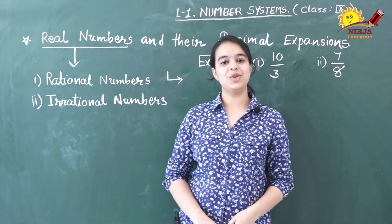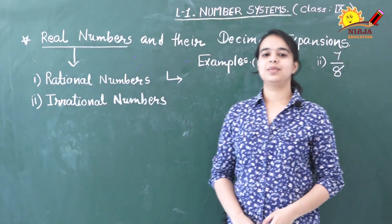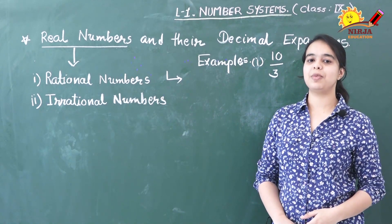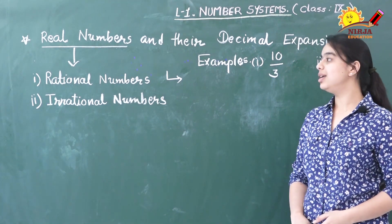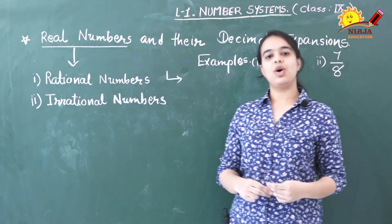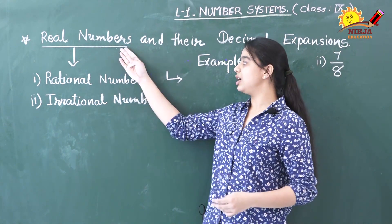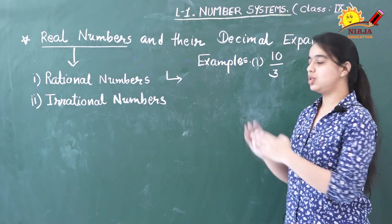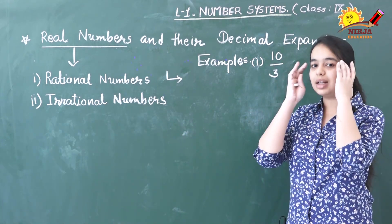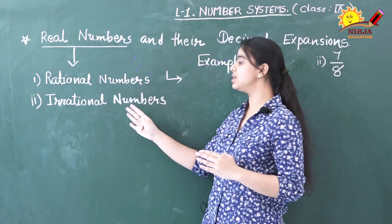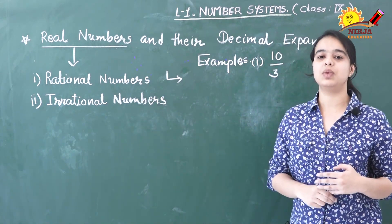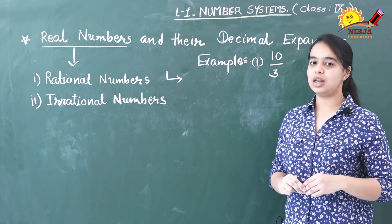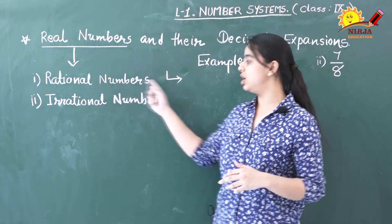Hello dear students, I hope you all are doing well. In this session we are going to discuss the next topic from your first chapter — Number System — which is real numbers and the decimal expansion. As you already know, real numbers include rational numbers and irrational numbers. In this session you are going to have a clear idea about what rational numbers and irrational numbers are, and by the end of this video you will be able to differentiate between them. Let us first start with rational numbers.